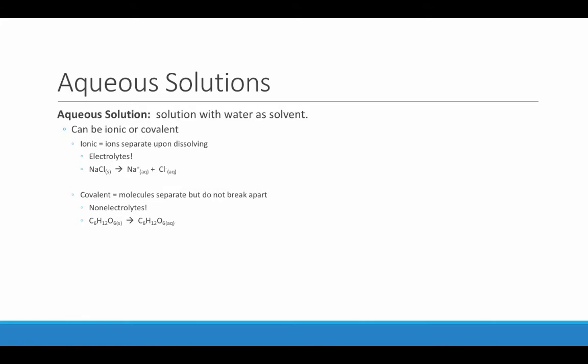An aqueous solution is a solution with water as the solvent. It can be ionic or covalent. When it's ionic, the ions separate or dissociate upon dissolving, resulting in the formation of an electrolyte — a solution that conducts electricity. For example, when NaCl solid is dissolved in water, we get aqueous Na⁺ ions and Cl⁻ ions that separate from one another. When covalent substances are dissolved in water, the molecules separate but do not break apart. These are non-electrolytes. Since no charged particles are put in solution, they do not conduct electricity. For example, solid sugar dissolved in water results in aqueous sugar — each sugar molecule has separated from its neighbors, but the sugar molecule itself remains intact.